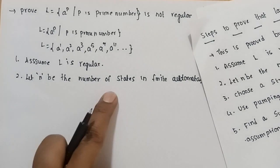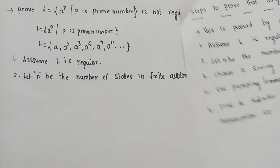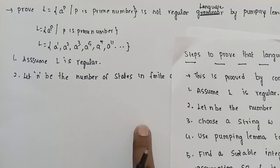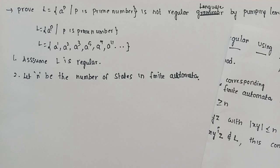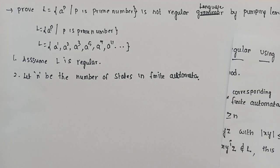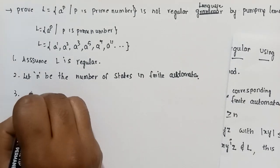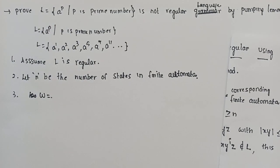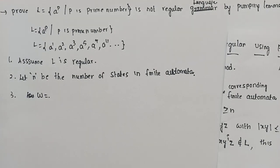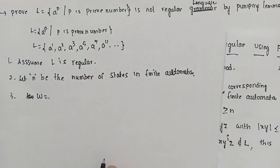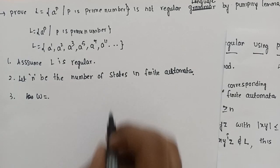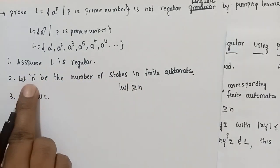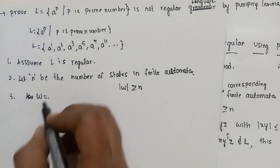Third step is choose a string w from the language L such that the length of that string w should be greater than or equal to n. So we select a string whose length is greater than or equal to n.